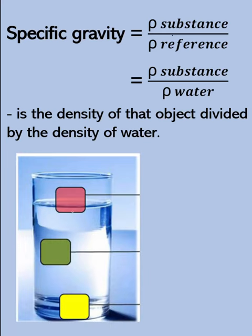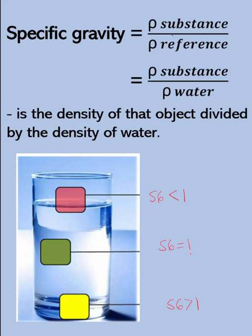So again, when the specific gravity of the object is less than 1, it will float above the water. If its specific gravity is greater than 1, it will sink under the water. When it's equal to 1, this means the density of the object equals the density of the reference substance — they are of equal densities — so it will neither sink nor float above; it will stay suspended within the water.